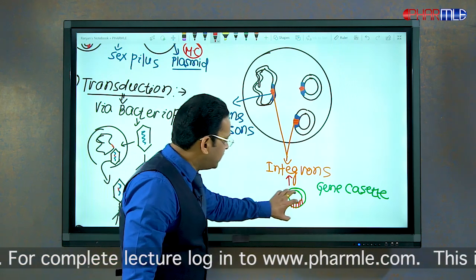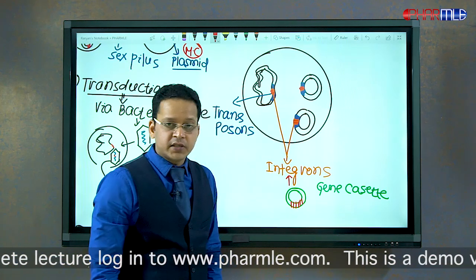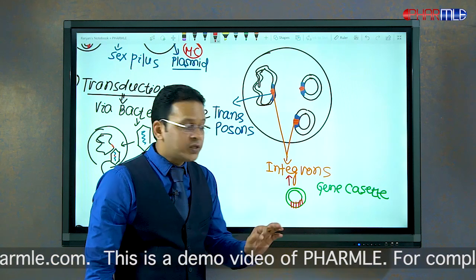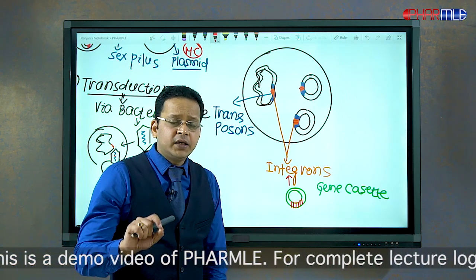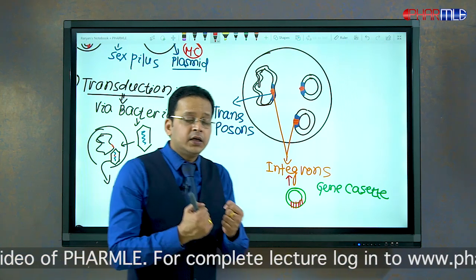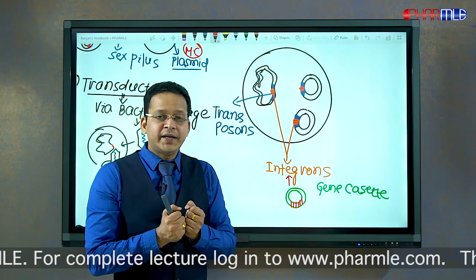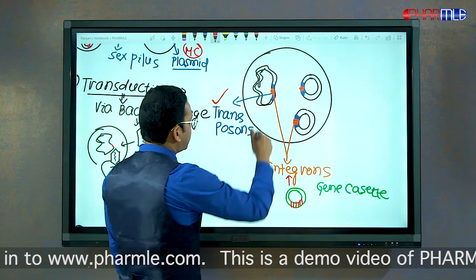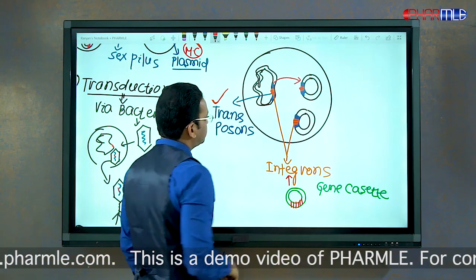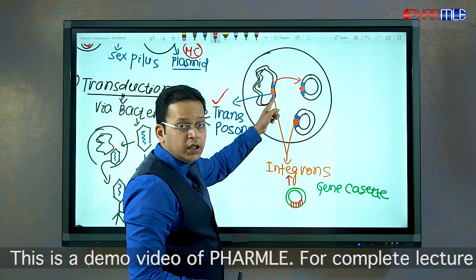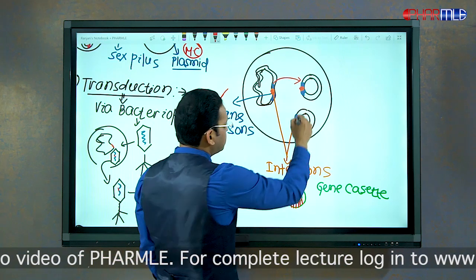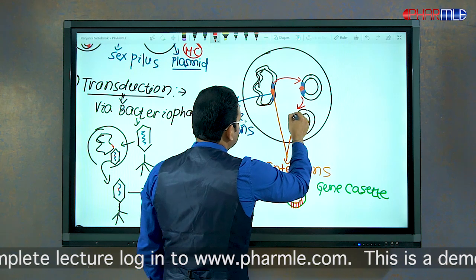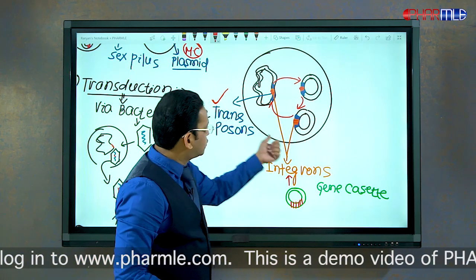The function of integrons is to integrate a gene cassette containing resistance to the bacterial chromosome or plasmid, with the help of an enzyme called integrase. Importantly, integrons themselves do not move — they are static within transposomes and accept gene cassettes for resistance. What is mobile is the transposome itself. A transposome can move from the chromosomal DNA to a plasmid, from one plasmid to another plasmid, or from a plasmid back to the chromosome.